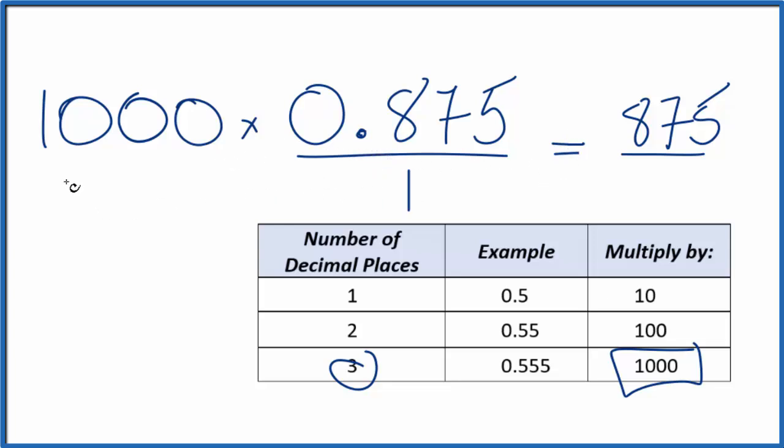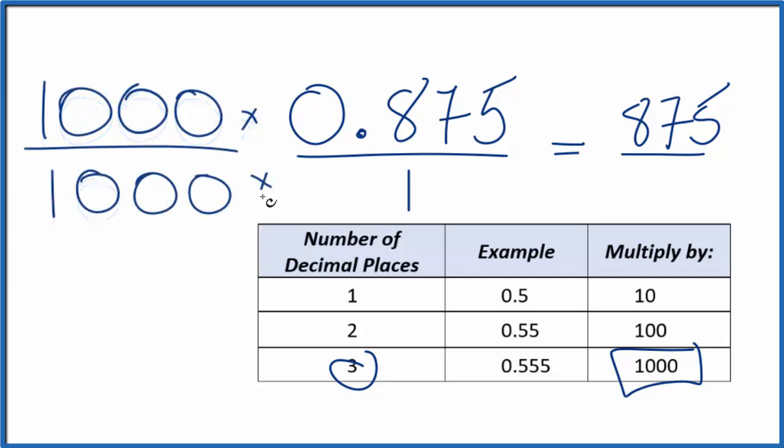Also multiply the bottom by a thousand. And all we're doing is multiplying by one—a thousand divided by a thousand, that's just one. So we don't change the quantity, just the form that it's written in. Thousand times one, that's a thousand. And now we have a fraction.